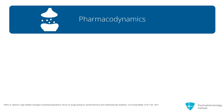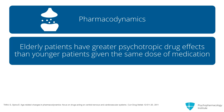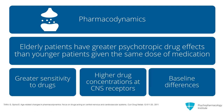Now a little about pharmacodynamics. Pharmacodynamic effects relate to the effects of drugs at the target tissue. These processes can occur at presynaptic sites, at postsynaptic sites, or they can involve enzyme inhibition. It's often observed that elderly patients have greater psychotropic drug effects than younger patients given the same dose of medication. This may be due to greater sensitivity to drugs, higher drug concentrations at CNS receptors, or baseline differences. For example, elders are often noted to have some degree of postural sway at baseline — if a drug adds to that, a fall might occur, which doesn't represent greater sensitivity but just an additive effect.